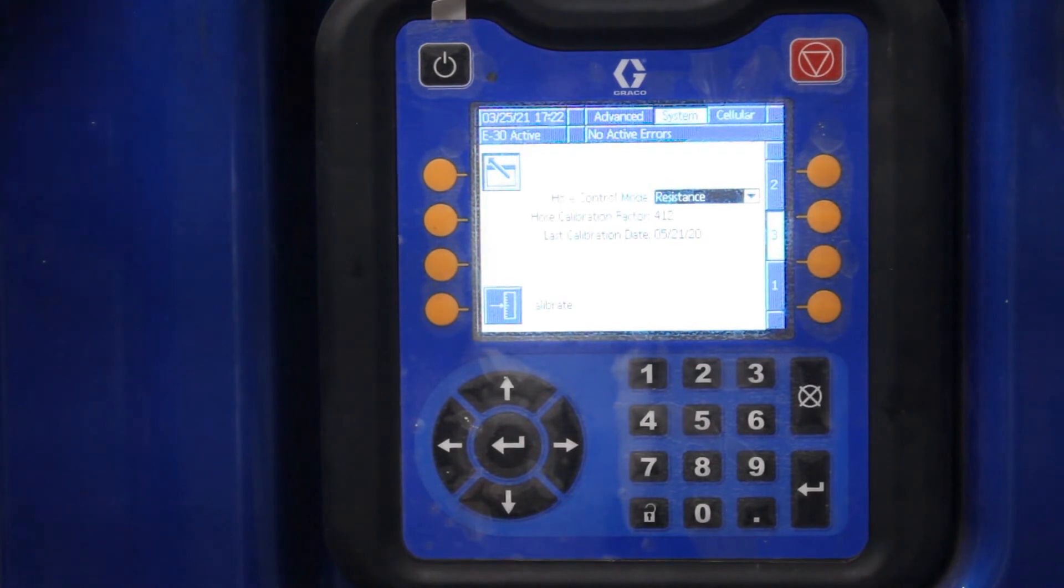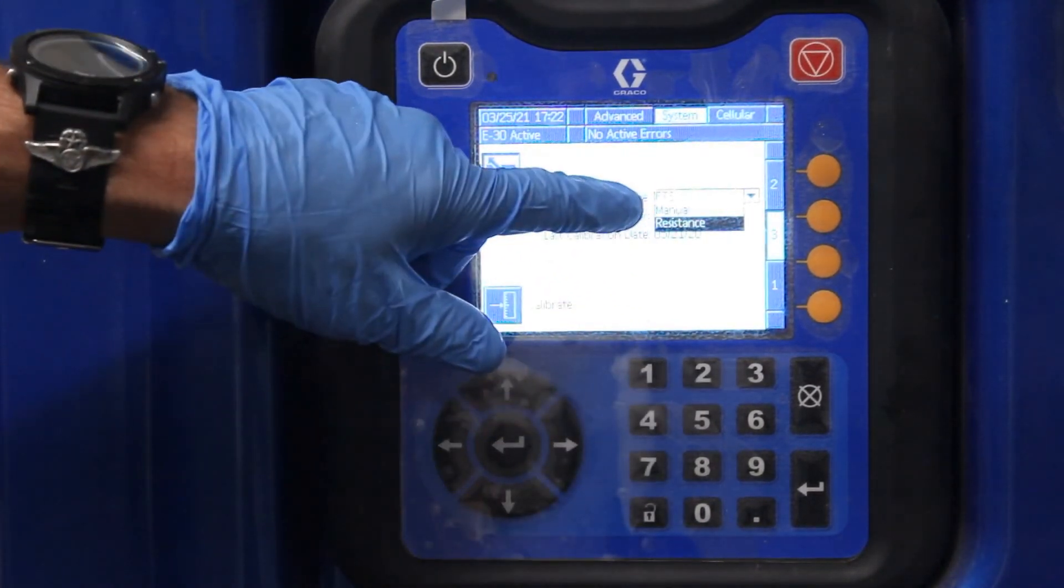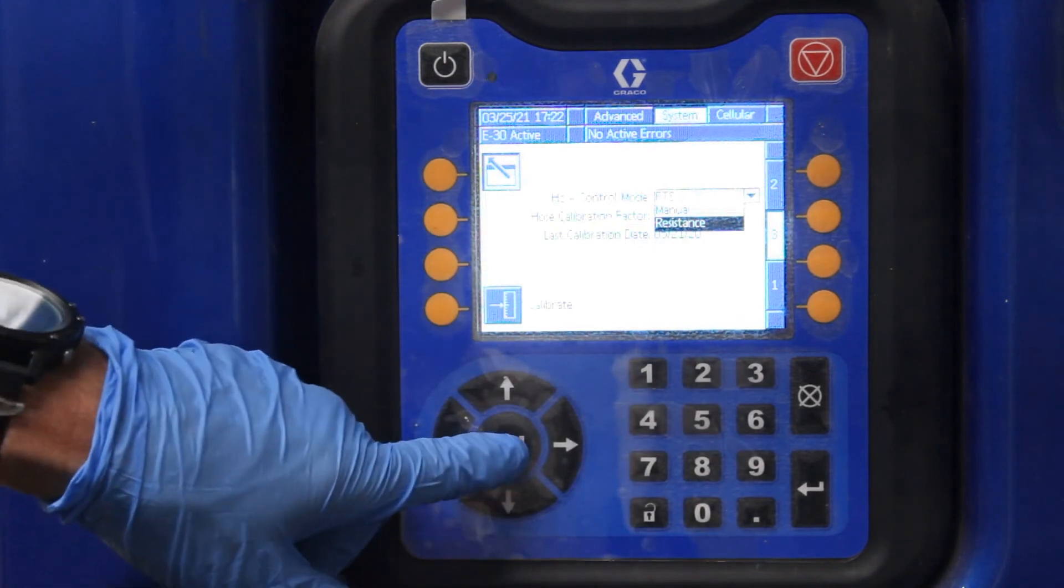If you wanted to change this, all you do is hit it, and it changes. You got FTS, manual, and resistance. We're going to stay in resistance.